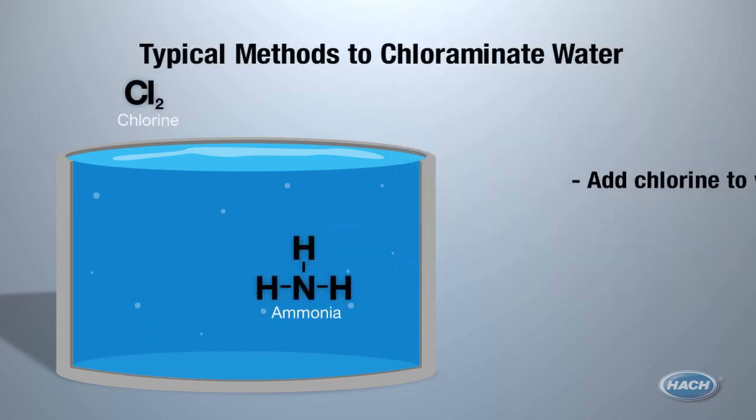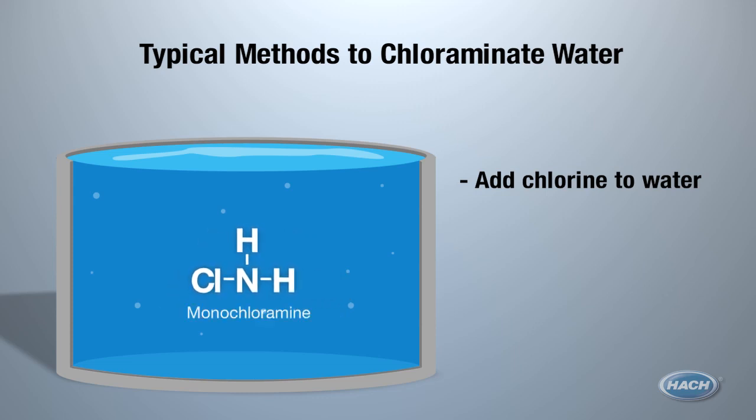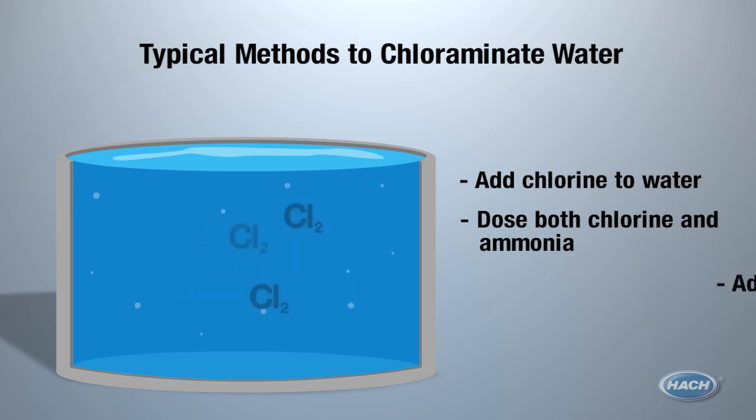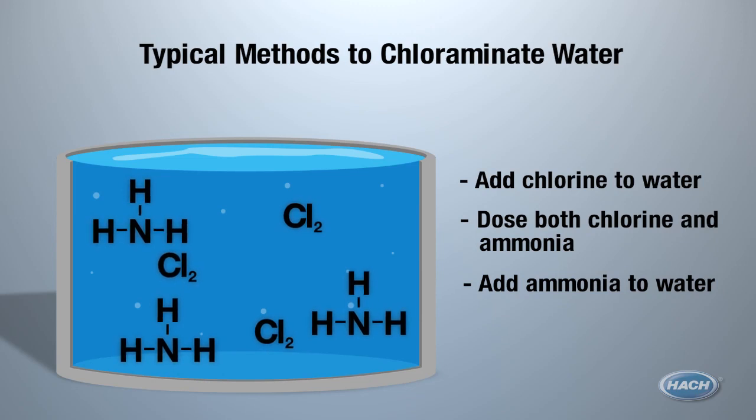When you chloraminate, you add chlorine to water with existing ammonia, or dose both chlorine and ammonia together, or you can add ammonia to water that has already been chlorinated in the treatment plant or another utility. In this example, let's pretend we are adding chlorine to water that already has ammonia.